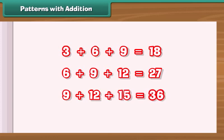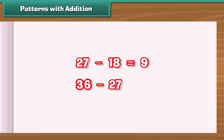We observed that the difference between two adjacent sums is 9. 27 minus 18 equals 9. 36 minus 27 also equals 9.